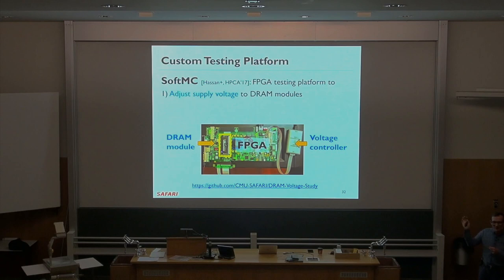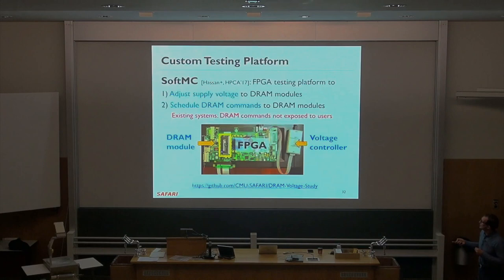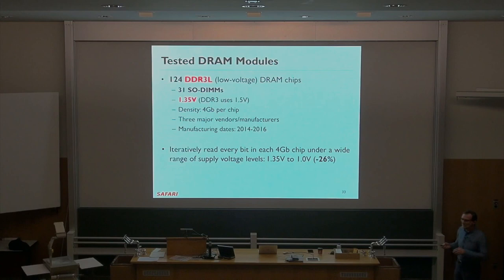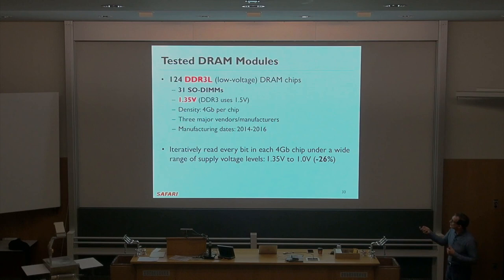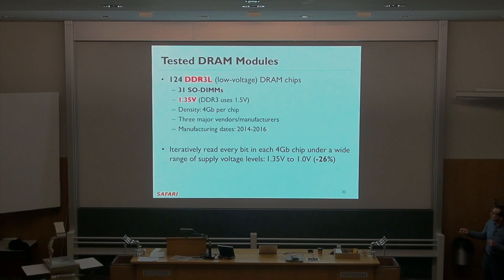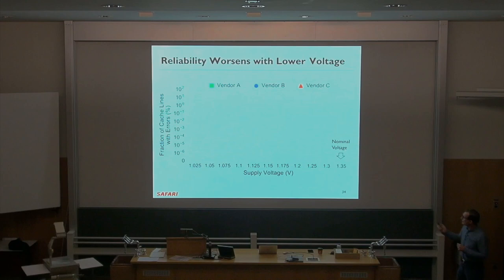We tested a bunch of modules and characterized what happens when we reduce the voltage — iteratively reading every bit in the entire chip over a wide range of supply voltage levels, say 1.35V to 1.0V, which is about 26% reduction. The graph shows supply voltage on the x-axis and the fraction of cache lines that we observe errors in on the y-axis, looking at three vendors. As you reduce the supply voltage, you start getting errors at some point, and that point differs for each vendor. We call that minimum voltage Vmin without errors.